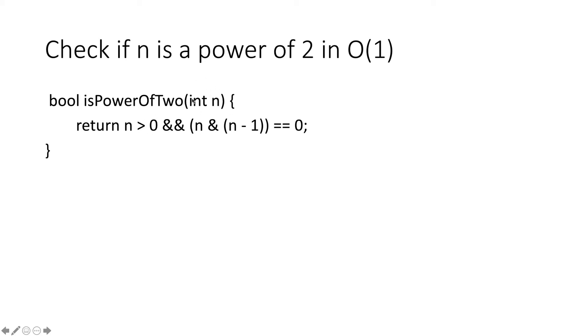So instead of iterating over the bits of n and checking if exactly one of them is set, we can just check if n is greater than 0, which means at least one bit must be set, and then check if n AND n minus 1 equals 0, which means at most one bit is set.